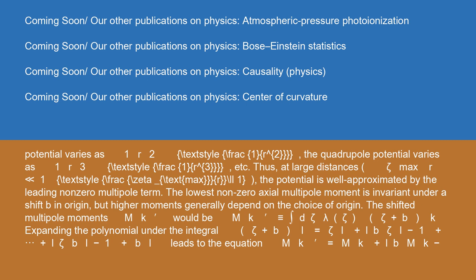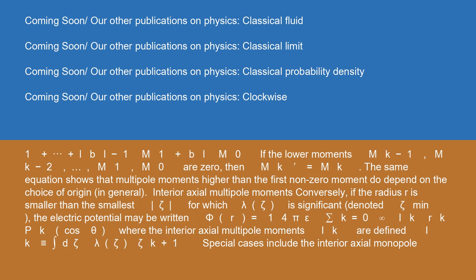The lowest non-zero axial multipole moment is invariant under a shift b in origin, but higher moments generally depend on the choice of origin. The shifted multipole moments m̃_k ≡ ∫ dζ λ(ζ)(ζ + b)^k. Expanding the polynomial under the integral, (ζ + b)^l = ζ^l + l·b·ζ^(l−1) + … + l·ζ·b^(l−1) + b^l, leads to: m̃_k = m_k + l·b·m_(k−1) + … + l·b^(l−1)·m₁ + b^l·m₀. If the lower moments m_(k−1), …, m₁, m₀ are all zero, then m̃_k = m_k. The same equation shows that multipole moments higher than the first non-zero moment do depend on the choice of origin in general.